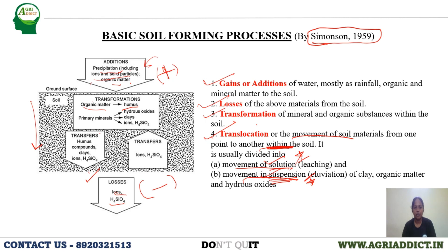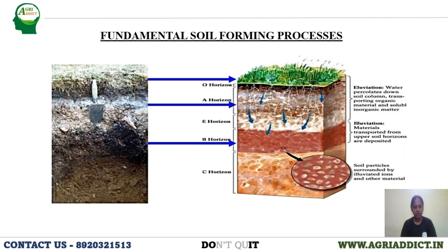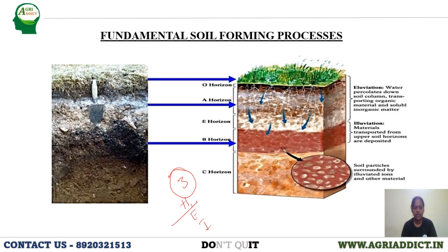These are the four basic soil forming processes. The next category is fundamental soil forming processes. There are basically three fundamental soil forming processes: humification, eluviation, and illuviation. Humification, as we saw earlier, is nothing but the transformation of organic matter into humus.